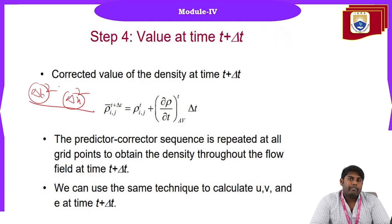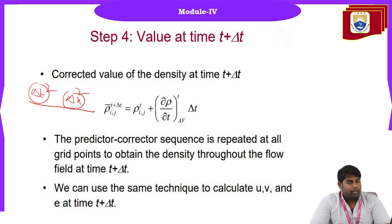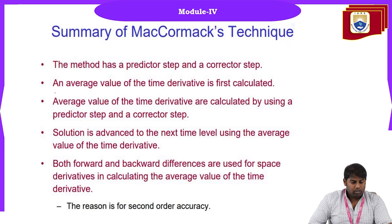We achieve O(Δt²) and O(Δx²) accuracy while avoiding the lengthiest mathematics, writing a short-form formulation and getting accurate values. Lax-Wendroff was very lengthy, whereas MacCormack's method is easy and straightforward.